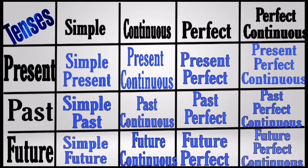The third type is perfect tense. Perfect tense expresses the idea that one event happened before another. The subdivisions are: present perfect, past perfect, and future perfect. Perfect continuous tense expresses the duration of how long something has been happening, and it usually includes the adverbs 'for' or 'since.'